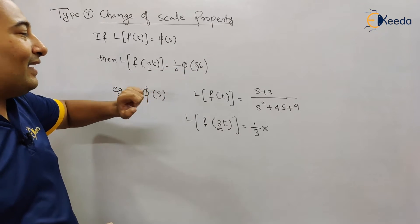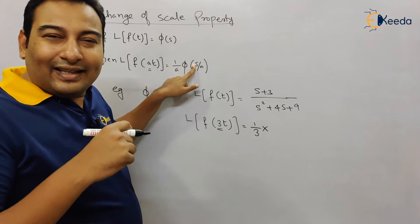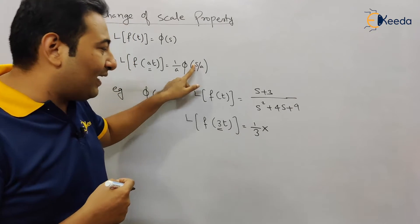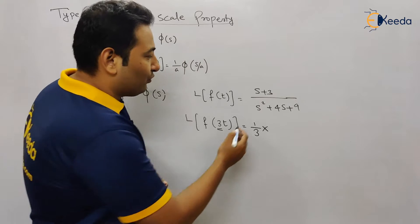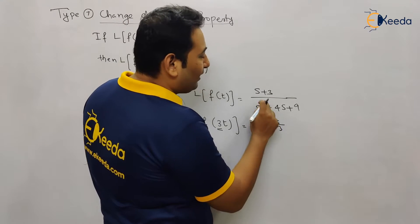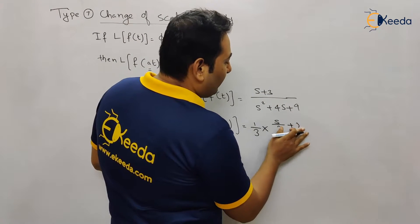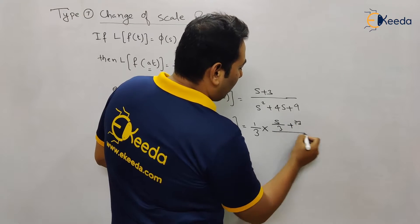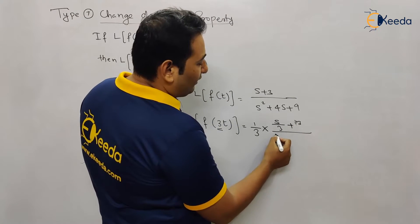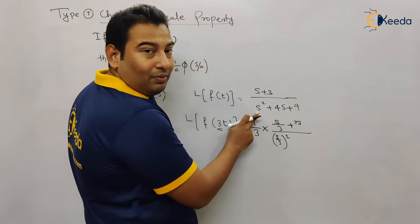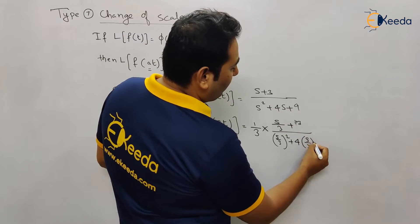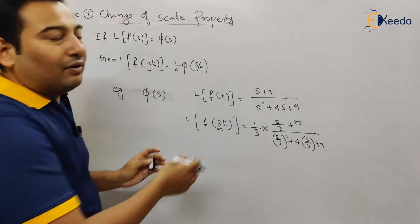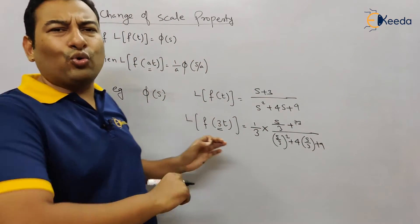That means in this case, it will be s/3. So here, this will be (s/3) + 3/(s/3)² - this s will be replaced, and this s will also be replaced, plus 9. I'm not solving it further because I just want to show how the property works.